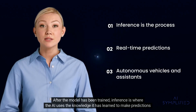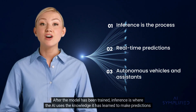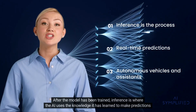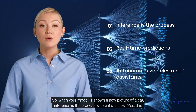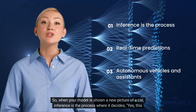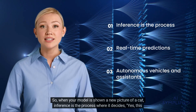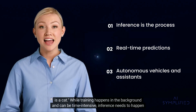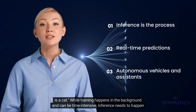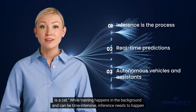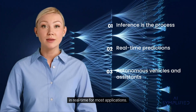After the model has been trained, inference is where the AI uses the knowledge it has learned to make predictions on new unseen data. So when your model is shown a new picture of a cat, inference is the process where it decides: yes, this is a cat. While training happens in the background and can be time-intensive, inference needs to happen in real-time for most applications.